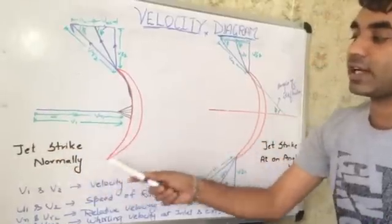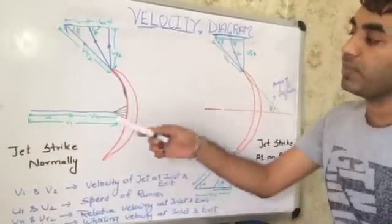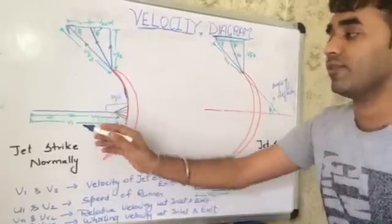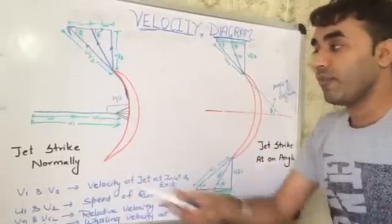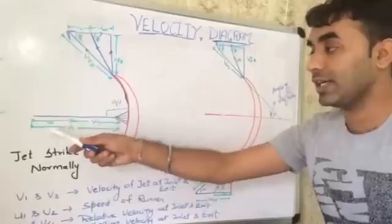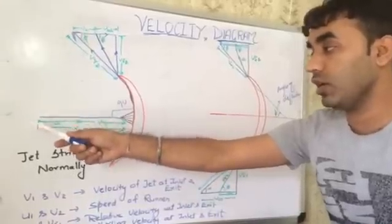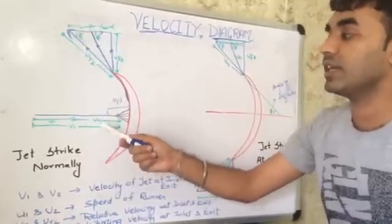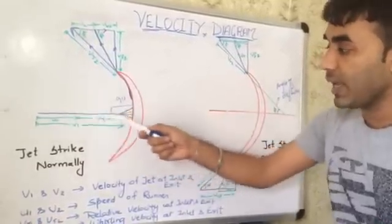The first condition is jet striking normally. Whenever the jet is striking normally, it makes an angle of 90 degrees. My friends, this makes an angle of 90 degrees, it comes with the velocity V1. At the similar time, we have here the velocity of runner, that is my U1. Then the velocity of runner is coming and combined with the V1, they are producing the Vr1, that is the velocity ratio. It will escape.